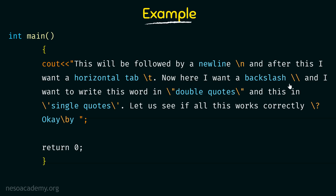Here I want to print an actual backslash. But we know backslash has a special meaning in the language, so in order to print it, we need to use an escape sequence — that is, another backslash. By making use of two backslashes, it will actually print a single backslash. Then I want to write the word 'double quotes' in actual double quotes. But in the cout statement, double quotes mean something else — they indicate the start of what's printed. So if we want to print double quotes on screen, we use the escape sequence backslash double quotes.